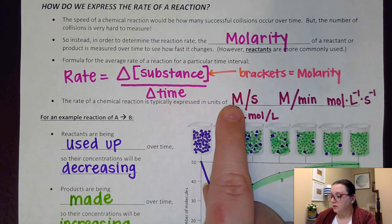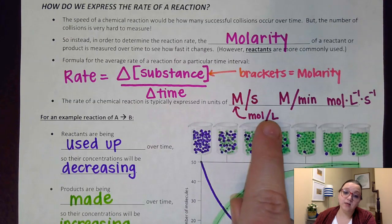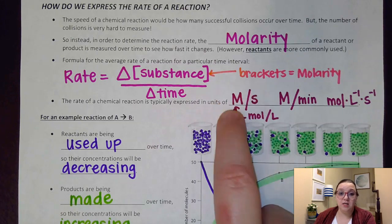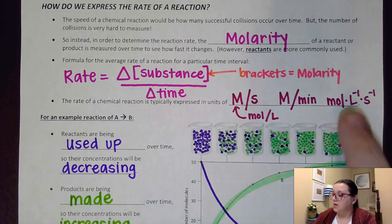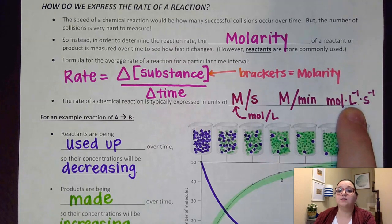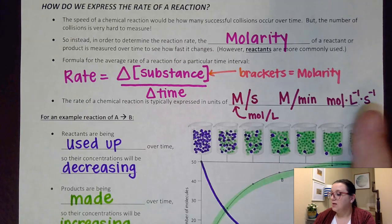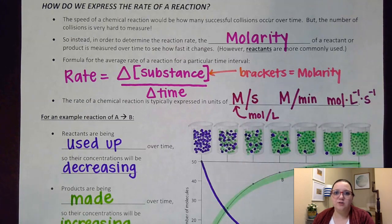Or if we remember that molarity is equal to moles over liters, you could see that substitution in here. Or they could rewrite this in a really fancy way and say moles times liters to the negative first times seconds to the negative first. Technically, all of these units kind of show the same idea of that change in concentration versus the change in time that would be taking place.